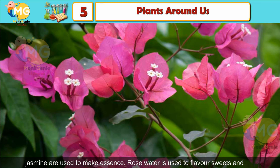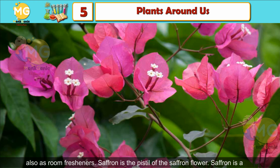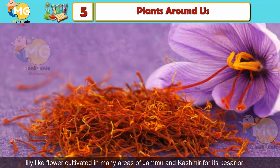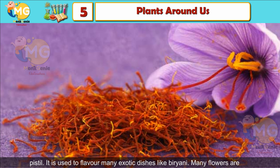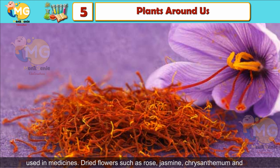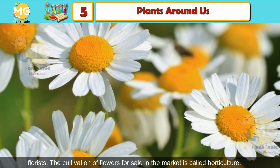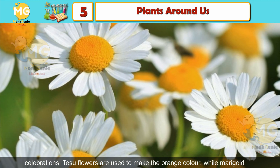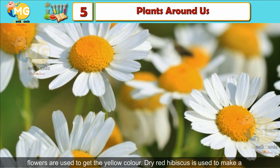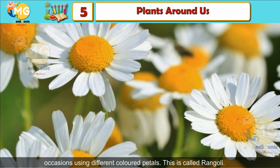We use flowers for decoration and to offer prayers. Flowers such as rose and jasmine are used to make essence; rose water is used to flavor sweets and as a room freshener. Saffron is the pistil of the saffron flower, cultivated in Jammu and Kashmir for its pistil and used to flavor dishes like biryani. Many flowers are used in medicines; dried flowers such as rose, jasmine, chrysanthemum, and chamomile are used in making herbal teas. Petals of some flowers are used to make dry colors called gulal during Holi celebrations.